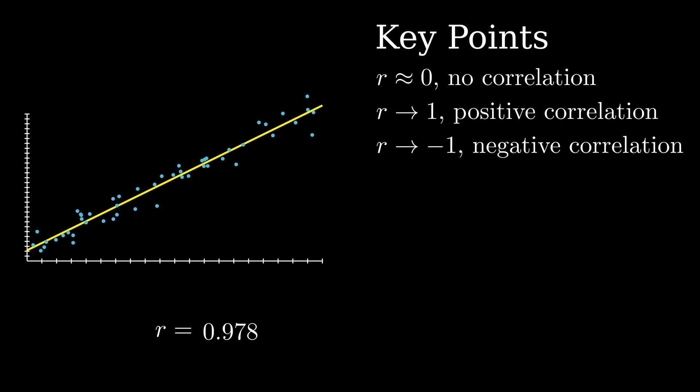However, the covariance is not interesting on its own. Instead, we use it for metrics like the correlation coefficient. And here are the key points.